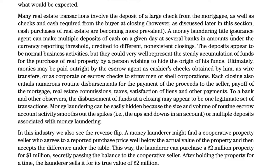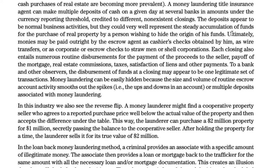Ultimately, monies may be paid outright by an escrow agent as cashier's checks, wire transfers, or as corporate or escrow checks to straw men or shell corporations. Each closing also entails numerous routine disbursements for payment of proceeds to the seller, payoff of the mortgage, real estate commissions, taxes, and satisfaction of liens. The disbursement of funds at closing may appear to be one legitimate set of transactions. Money laundering can be easily hidden because the size and volume of routine escrow account activity smooths out the ups and downs — i.e., multiple deposits associated with money laundering.